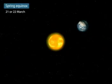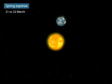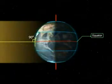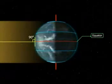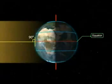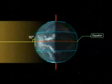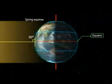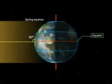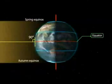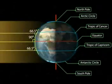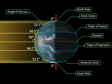Spring Equinox: On the 21st or 22nd of March, the overhead sun is over the equator. The equator receives the largest amount of solar radiation. At this time, the northern hemisphere is in the spring equinox, while the southern hemisphere is in the autumn equinox. The angle of the sun decreases towards the poles.